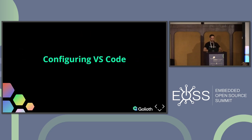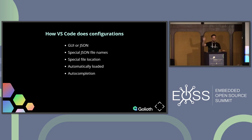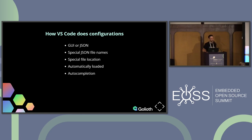Now let's get into the configuration. This is probably where I spent most of my time preparing. There are a lot of features in the configuration system of VS Code that once you figure them out, you can use them as part of your development. There's a GUI and there are JSON files I found really helpful for setting up your environment. There are well-known file names — if you call your file a certain thing, VS Code knows what type of configuration it is and auto-loads it. It'll even give you auto-completion of the values in those files, which is actually where I get most of my documentation from.